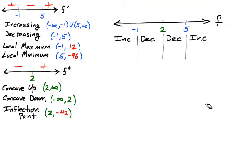On the first and the last interval, f is increasing, and on the middle two intervals, f is decreasing. While on the first two intervals, the function is concave down, and on the last two intervals, the function is concave up.